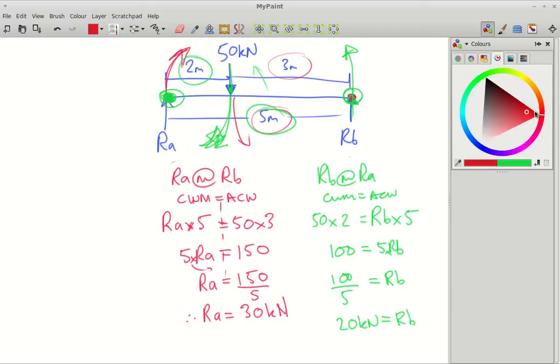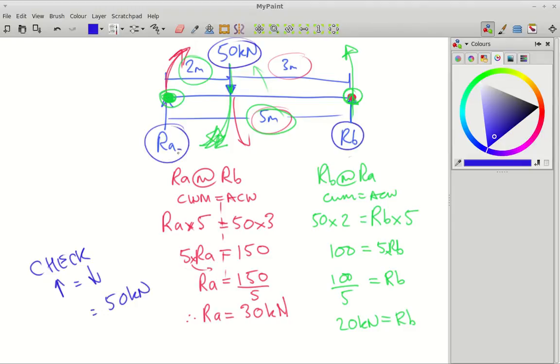And we're going to check this. So we're going to do check. So we're going to check forces up equals forces down. So coming down, we've got 50 kilonewtons. And going up, we've got RA and RB. Well, RA is 30 kilonewtons, and RB is 20 kilonewtons. So 30 plus 20 does equal 50. 30 plus 20 equals 50, and that's already 50. So yeah, it checks. You've calculated that correctly. Use a mobile phone app, something like Force Effects by Autodesk or BendingMomentDiagram.com to verify these.